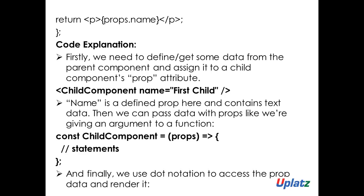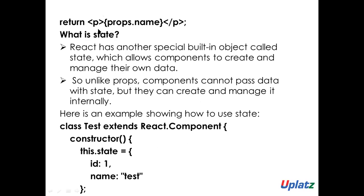Here is the code explanation. First we need to define or get some data from the parent component, and then we need to assign that to the child component's props attribute. The props attribute here will be the name — I am getting some data from the parent component and assigning it to the props attribute. This is the value I am getting from the parent and assigning to the props attribute 'first child'. Name is defined as a prop here, which contains some data. I am passing the data with props like giving an argument to a function, using an arrow function. Finally, props will render the data — I am just returning props.name.